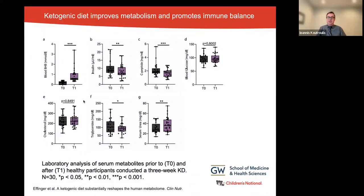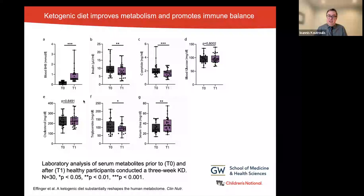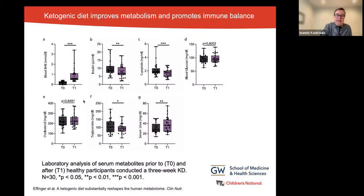Total blood cholesterol concentrations, as well as levels of LDL, non-HDL, and HDL remained unaltered. Triglycerides were markedly reduced after three weeks of ketogenic diet. Serum urea concentration was elevated under ketogenic diet — one of the negatives of this diet. Interestingly, these changes were not related to weight loss, as correlation analysis revealed no significant association. We can see how ketogenic diet can have some significant effects on metabolism.